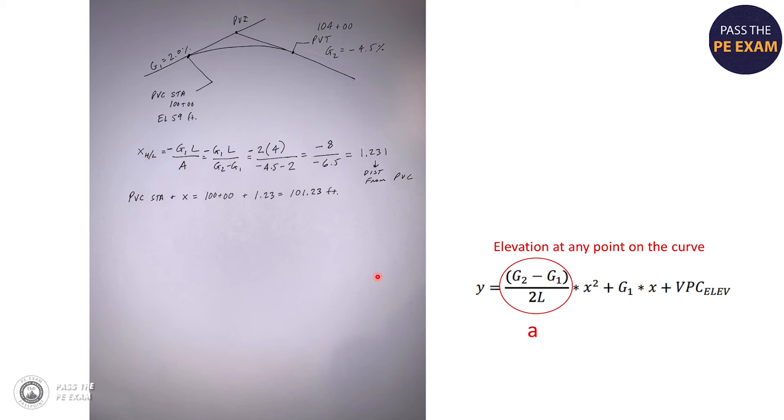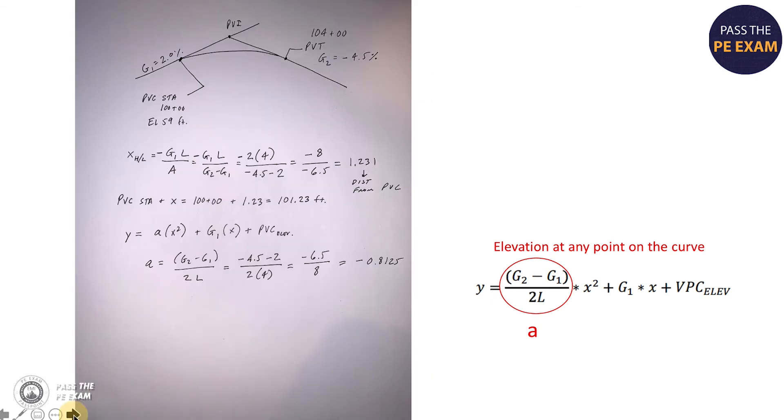So the elevation at any point on the curve X is designated by Y here in this equation. And one thing to note that this term in this equation, G2 minus G1 over 2L, is often denoted by a lowercase a. So let's solve this equation out here. Here you can see I've written it with the A. So Y equals A times X squared plus G1 times X plus the PVC elevation. So first thing I need to do is solve A.